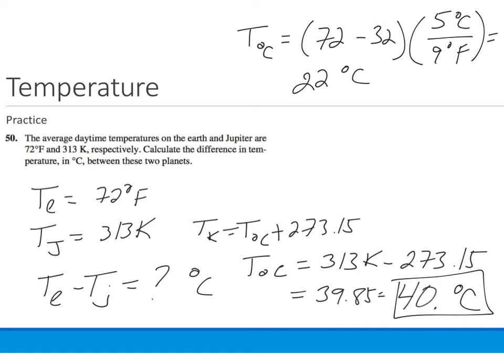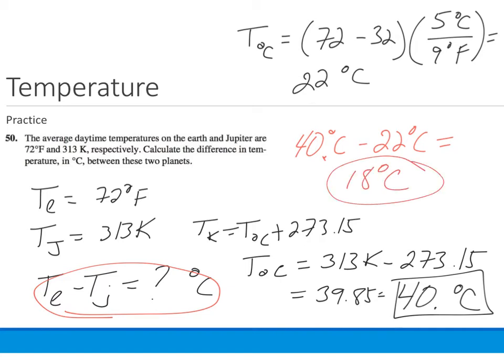What we're looking for is the difference between the temperature on Earth and the temperature on Jupiter. We can see that the temperature on Jupiter is higher than the temperature on Earth, so we're going to reverse that. So we'll have 40 degrees C minus 22 degrees C, and we are left with a temperature difference of 18 degrees C between Earth and Jupiter.